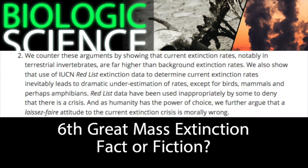Outcome two: "We counter these arguments by showing that current extinction rates, notably in terrestrial invertebrates, are far higher than background extinction rates. We also show that use of IUCN red list extinction data to determine current extinction rates inevitably leads to dramatic underestimation of rates, except for birds, mammals, and perhaps amphibians. Red list data have been used inappropriately by some to deny that there is a crisis. And as humanity has the power of choice, we further argue that a laissez-faire attitude to the current extinction crisis is morally wrong."